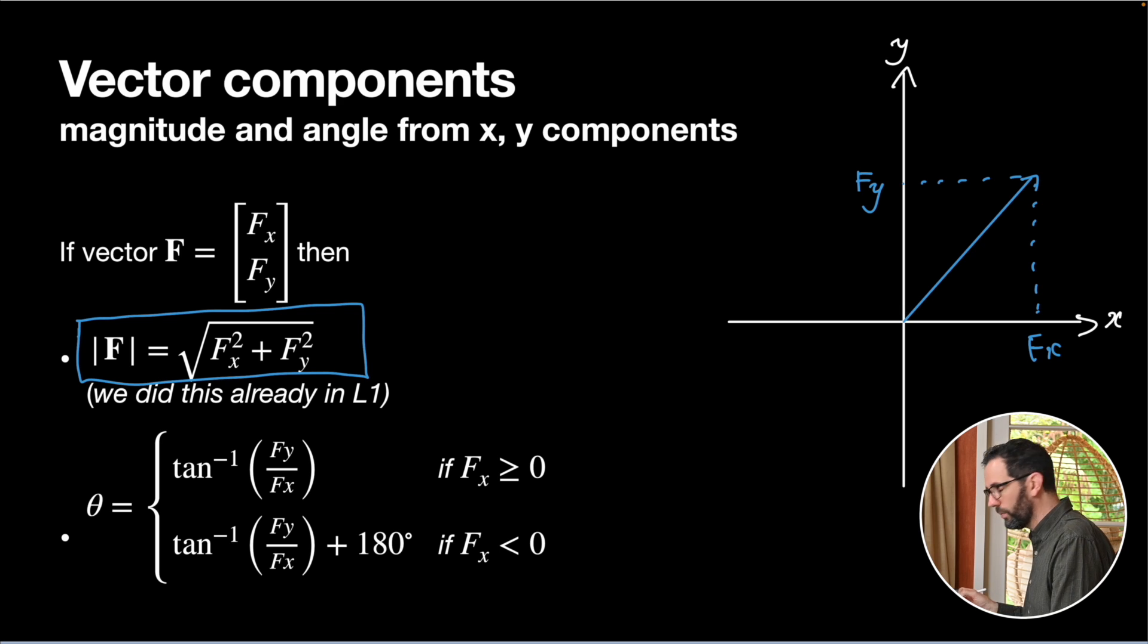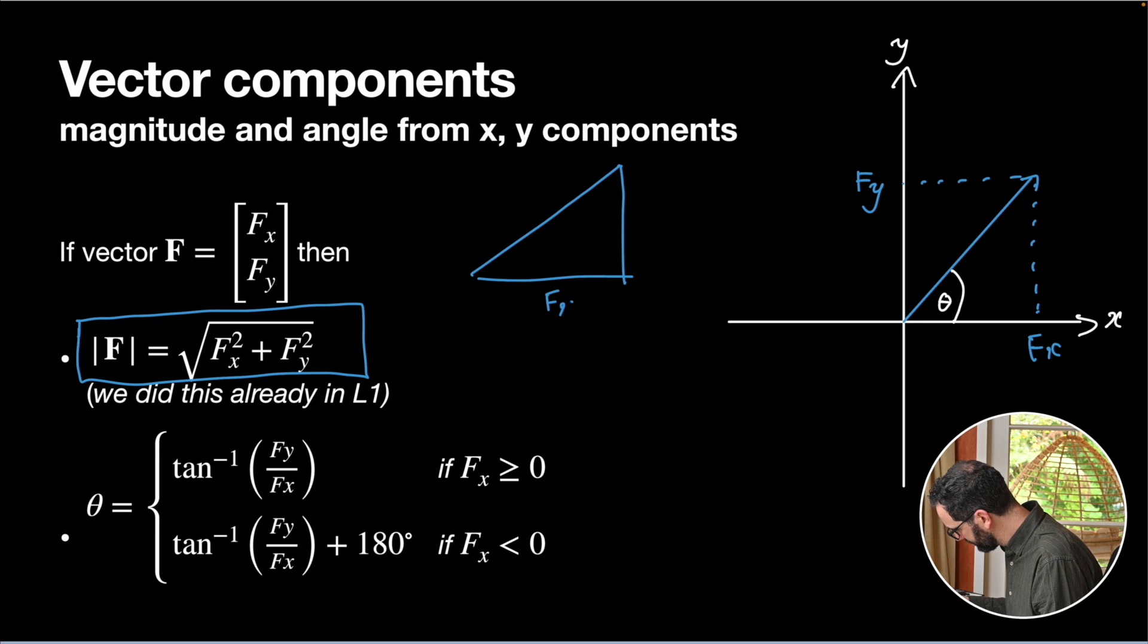But how do we get the angle? Here's the angle theta that we want. Basically what we want to do is we want to take fy and fx, they are the two sides of our triangle. So we can find this angle by essentially doing some trig on it. So our triangle would be fx, fy, theta. And we know that tan theta, that's our opposite over adjacent, is fy over fx. And so our theta is going to be tan inverse of that fy over fx.